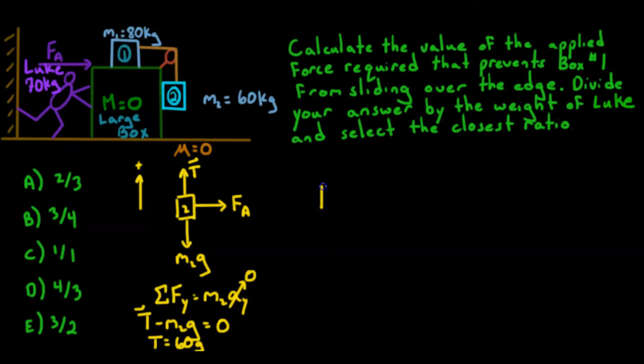So for block number one. We have that same tension force pulling to the right. And then we have a normal force, because it's sitting on top of that large box. And of course, we have a gravitational force, called m1g. Now if we analyze all the forces in x here, because I'm trying to figure out what that tension is...